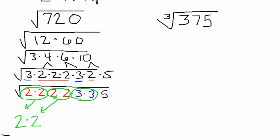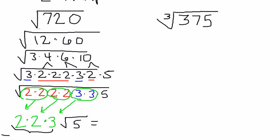Here's a group of two 3s — I can trade that group of two 3s for a single 3 on the outside. When it gets down to the 5, there's only one of them. I don't have another 5, I can't make a group of 2, and I can't factor it any further — it was prime. So that 5 just has to stay inside the radical sign. When I end up with multiple factors outside, I finish the problem by multiplying those values back together: 2 times 2 is 4, and 4 times 3 is 12. So my answer is 12 radical 5.